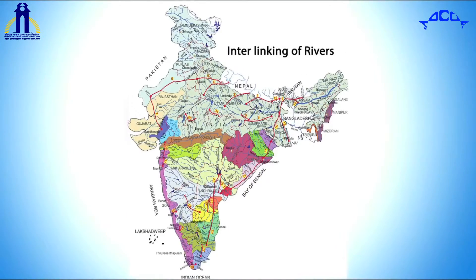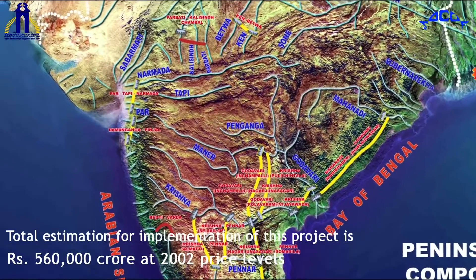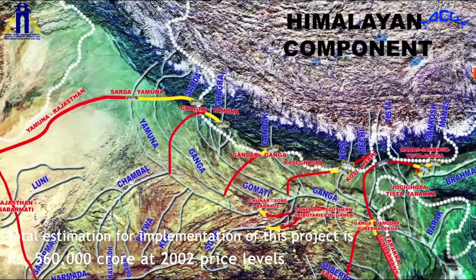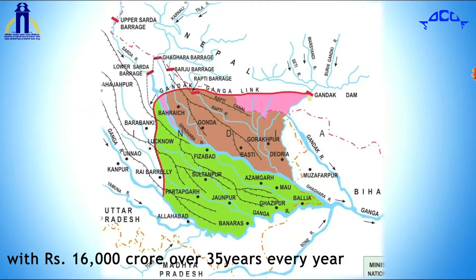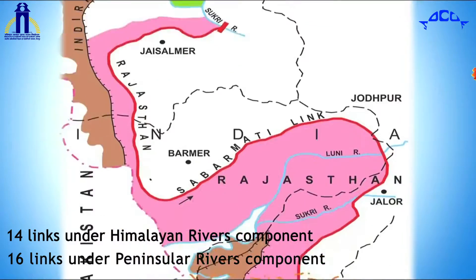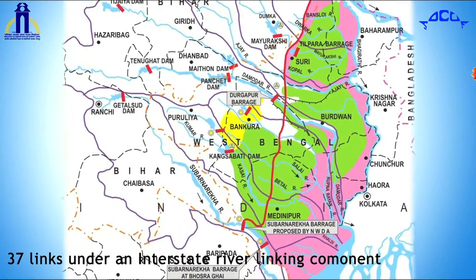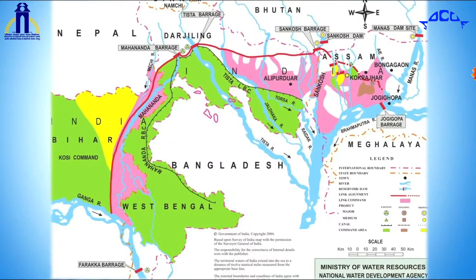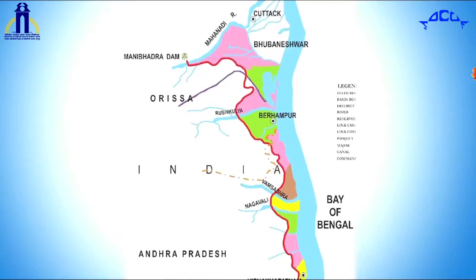This project is formerly known as the National Perspective Plan. The total estimated cost for implementation is Rs. 5,60,000 crores at 2002 price levels, with Rs. 16,000 crores to be spent every year over 35 years. NWDA has identified 14 links under the Himalayan Rivers Component, 16 links under the Peninsular Rivers Component, and 37 links under the Interstate River Linking Component for inter-basin transfer of water, under the National Perspective Plan prepared by the Ministry of Water Resources.